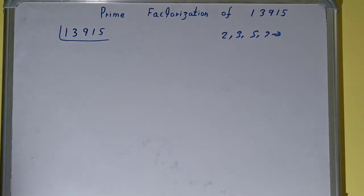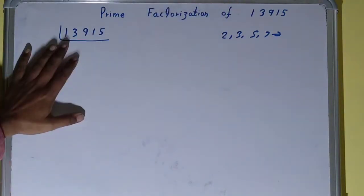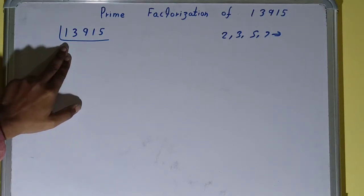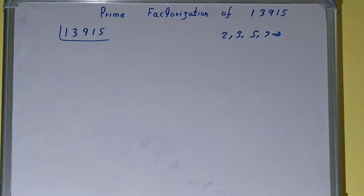What we do is we start with the lowest prime number we have, that is 2, and we see whether the number is divisible by it or not. Can we divide 13915 by 2? No, not at all, because the number is odd.